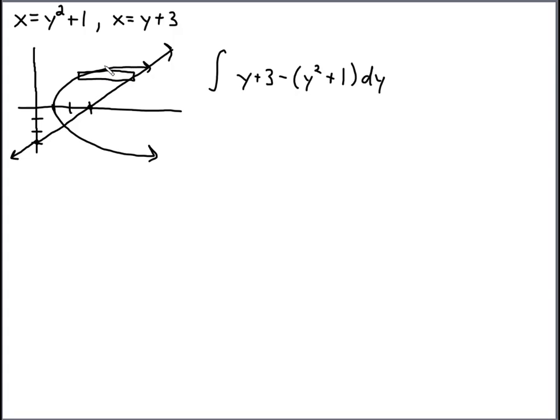For the bounds, we need to figure out the y intersection values of these, the y values for these intersection points here. My drawing is not that great, so I think we can just do this algebraically. We'll set the two functions equal to each other. So y squared plus 1 is equal to y plus 3.